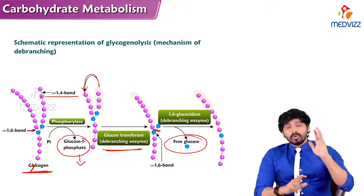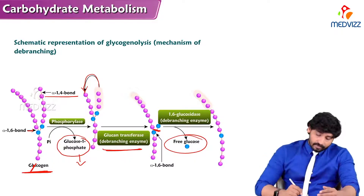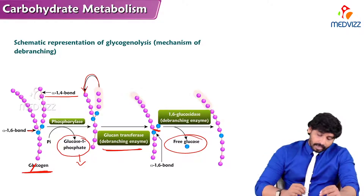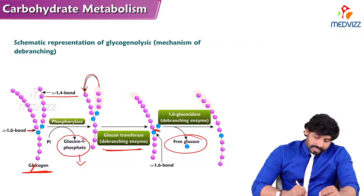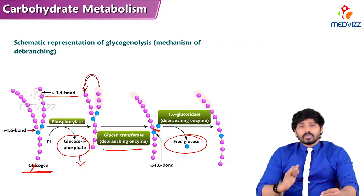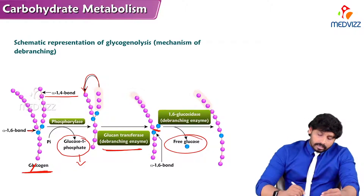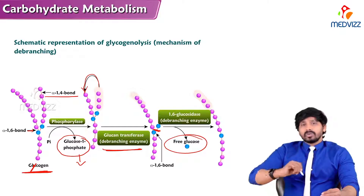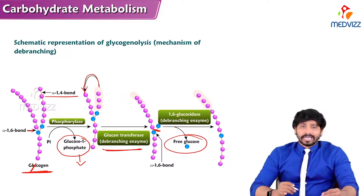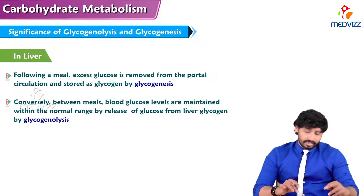That is the difference between the de-branching enzyme glucan transferase and phosphorylase. Phosphorylase can form only glucose 1-phosphate, but in case of glucan transferase it will form 3 free glucose units without any phosphorylated form. This de-branching enzyme keeps on working and removes one of the glucose units at the branching point. Once the branched glucose units are rejoined to the main stem, the phosphorylase will commence action and removes the glucose units.